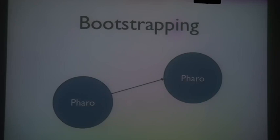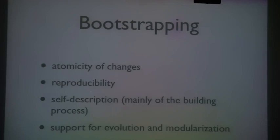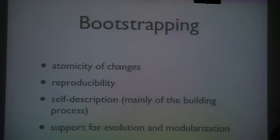We are not talking about copying the image and saving it to a new file — we are talking about creating a new image from scratch. What is the process we have to follow to create that new system? Bootstrapping will give us atomicity of changes, reproducibility, and self-description of the system, because we will describe the whole system and the process to build itself. Right now, a Smalltalk image is self-describing but it only describes its own structure and behavior — it doesn't reflect the process that builds itself. We want to introduce that part that was lost over about 30 years.